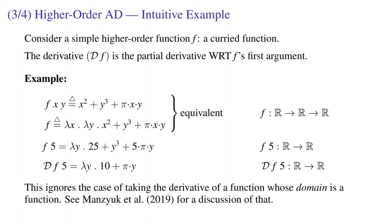We can take the derivative of f at 5 and we'll get the partial derivative of f with respect to its first argument. So a map from y to the derivative of that expression with respect to x at the point x equals 5 and y.